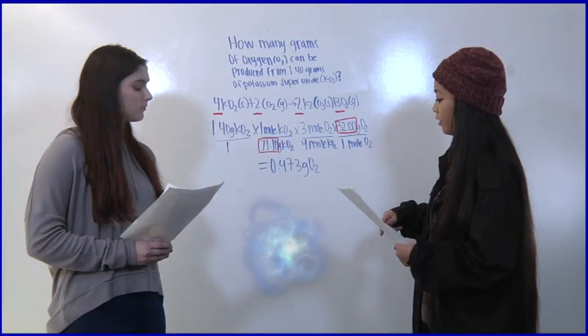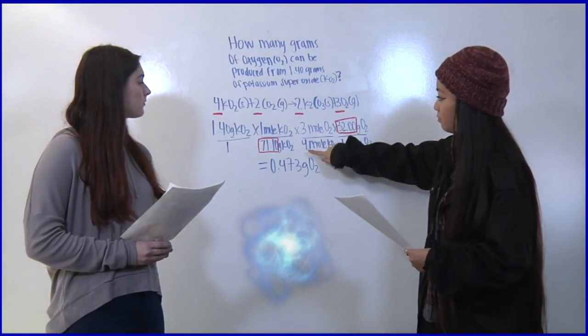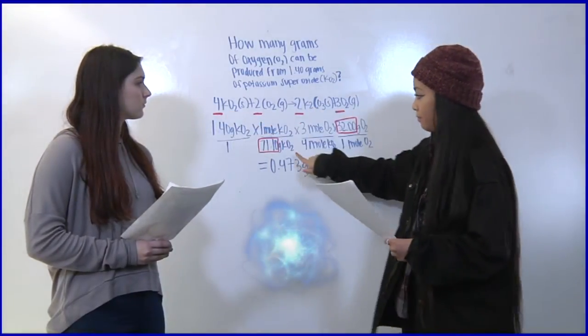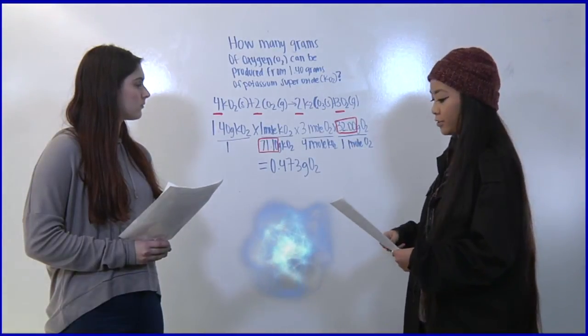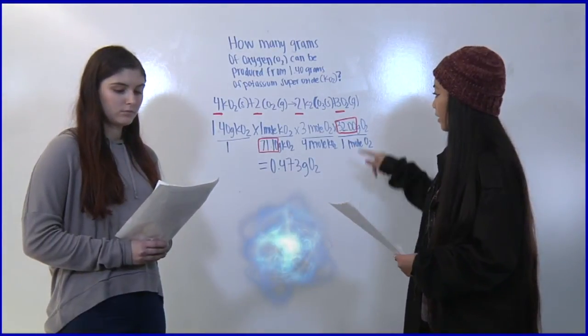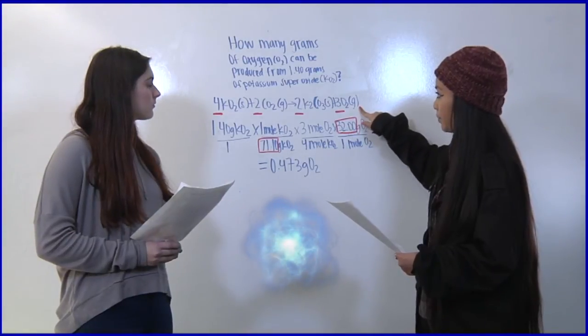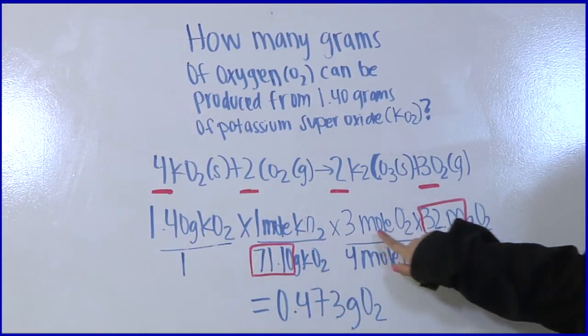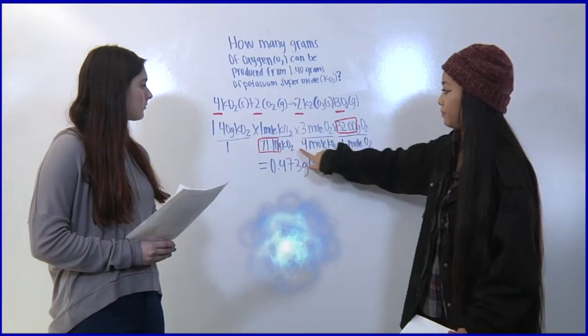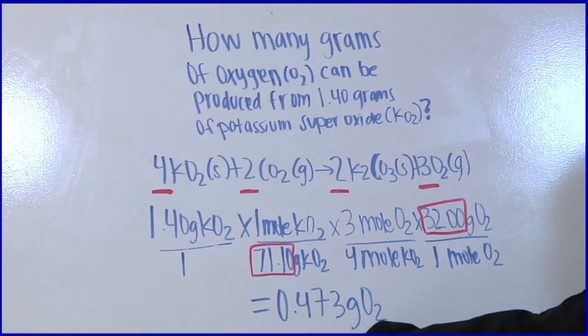Then we use the coefficients in front of the elements as the mole conversion. Then we look at the periodic table again for potassium superoxide. After you times the tops and divide by the bottoms your answer should be 0.473 grams O2.